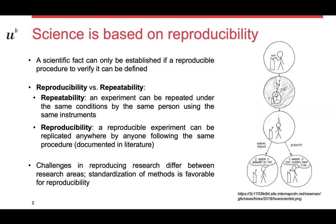Sometimes there is a distinction between reproducibility and repeatability. Repeatability can be used as a weaker form of reproducibility. A definition might be that an experiment can be repeated under the same conditions by the same person using the same instruments for repeatability, whereas a reproducible experiment can be replicated anywhere by anyone following the same procedure, which is then documented in literature. This distinction doesn't make sense for all topics, because for some topics research is standardized to such an extent that we would always assume the stronger reproducibility requirement is true.